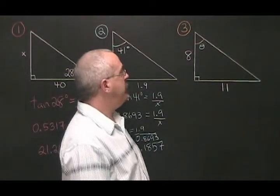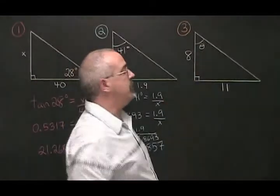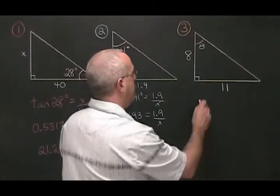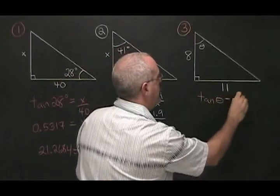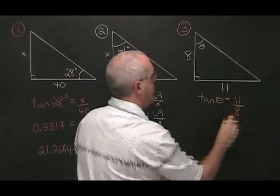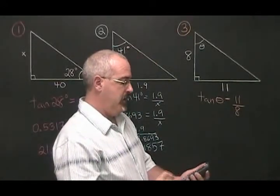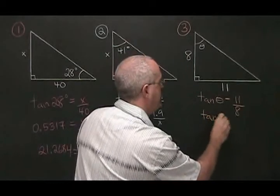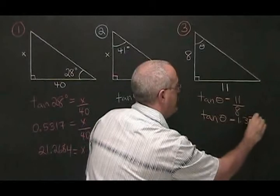In example 3, we are looking for this angle theta, which has an adjacent side of 8 and an opposite side of 11. Our TOA formula: TAN of theta equals 11, the opposite, over 8, the adjacent. 11 divided by 8 gives us 1.375. So TAN of theta equals 1.375.